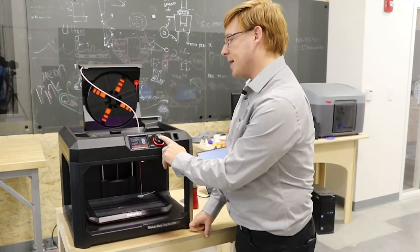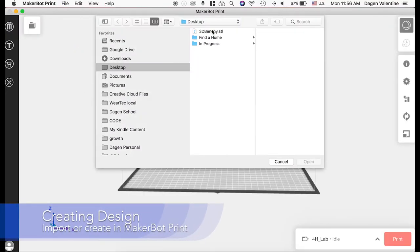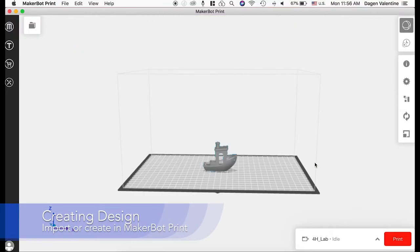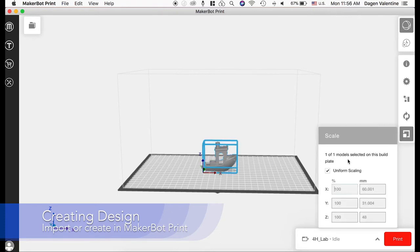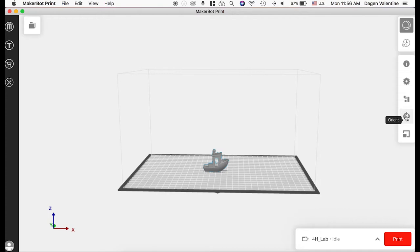So I can select that the filament is extruding. Now I'm going to head over to the computer to set up the print. Using the software MakerBot print, I've opened my design, and I can see it on the build plate. I'll adjust the settings to what I'm looking for in this product.